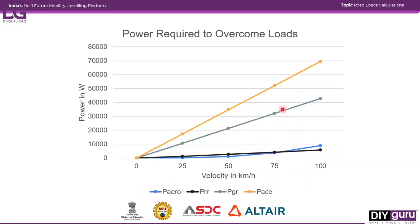The most dominant power requirement is for acceleration. This is because we are sprinting from 0 to 100 km/h within 10 seconds, so acceleration is very high. The acceleration power line is almost linear — as speed increases, so does the acceleration. This explains why acceleration power dominates all other power requirements in the chart.